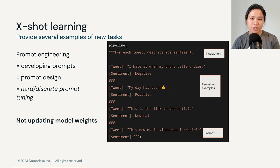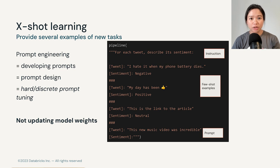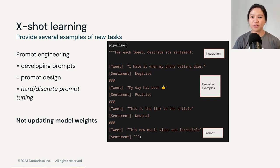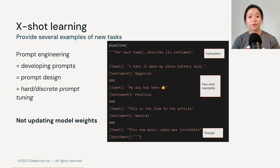Few-shot learning is when we provide several examples of new tasks in a text prompt. We typically use this when we don't want to do fine-tuning or when we lack labeled training data, but we can easily write out a few examples for the LLM to learn from. This process of writing out instructions in the form of text is called a prompt, and we iteratively write different prompts to find the best one to pass to an LLM — a process called prompt engineering. For this module, we'll be referring to prompt engineering as hard prompt tuning or discrete prompt tuning. A key distinction is that few-shot learning doesn't update any model weights, whereas fine-tuning does.